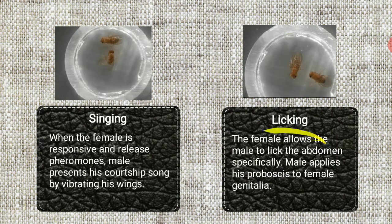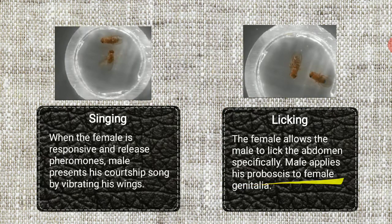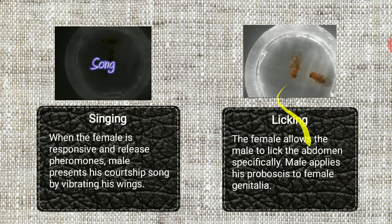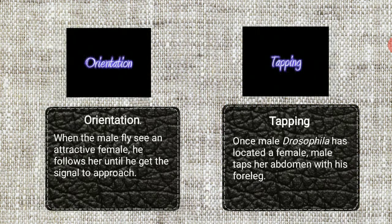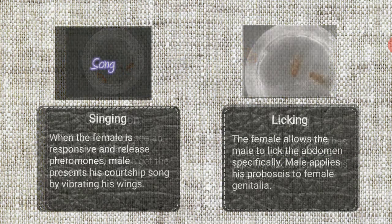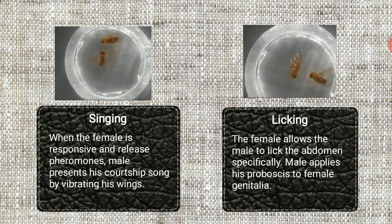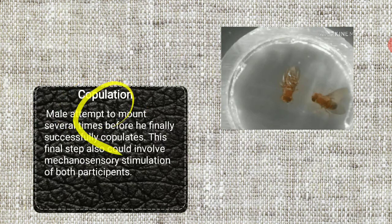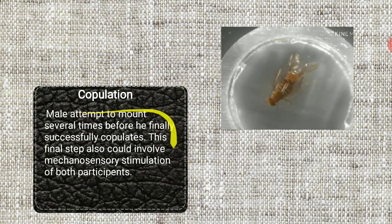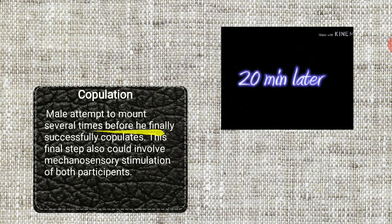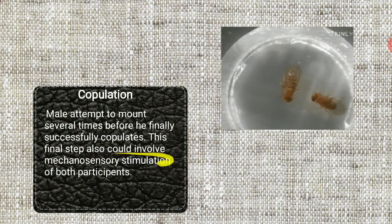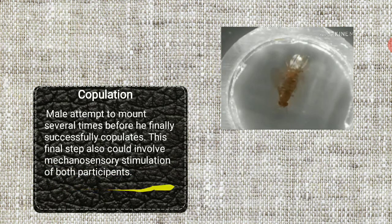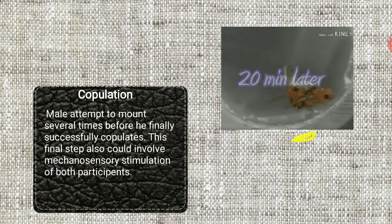Next step is licking. The attracted female accepts the male, so the female allows the male to lick the abdomen. The male applies his proboscis to the female genitalia. Here we observe how the male applies the proboscis to the female genitalia. Next we move on to the copulation step. It is the final step in the courtship behavior of Drosophila melanogaster. The male attempts to mount several times before he finally successfully copulates. This final step could also involve mechanosensory stimulation of both participants. Here we observe how the male and female are involved in the copulation process.